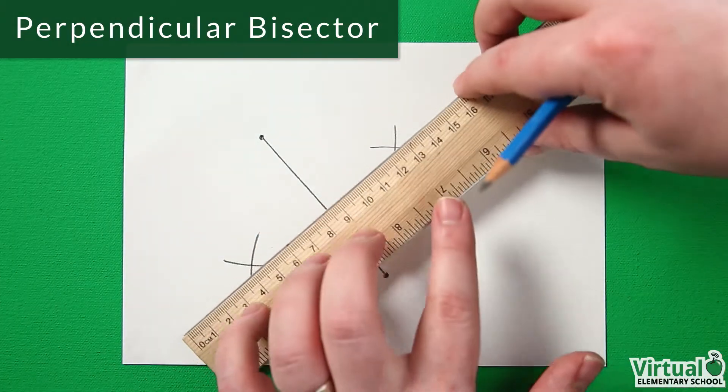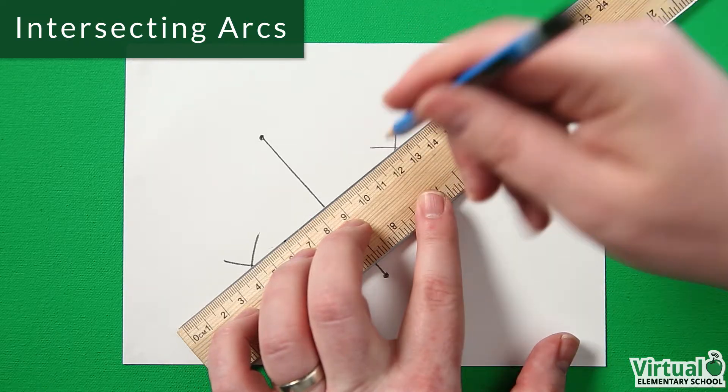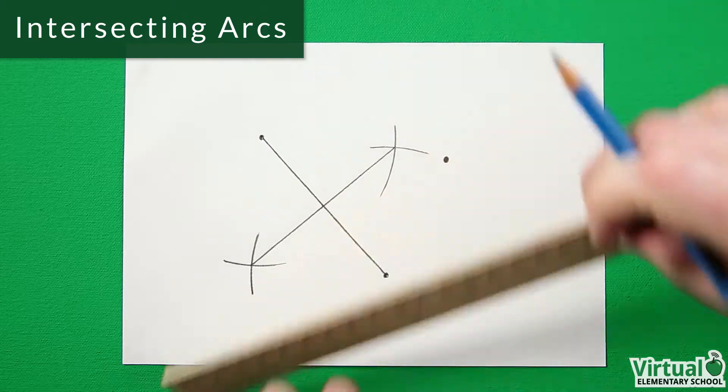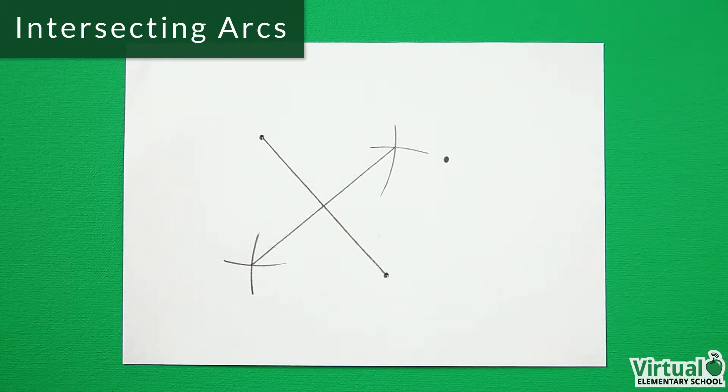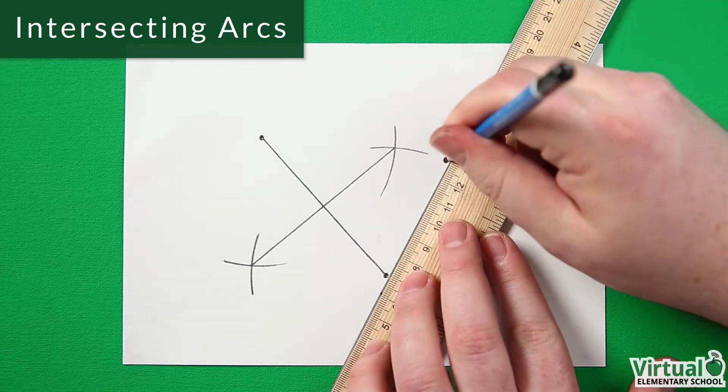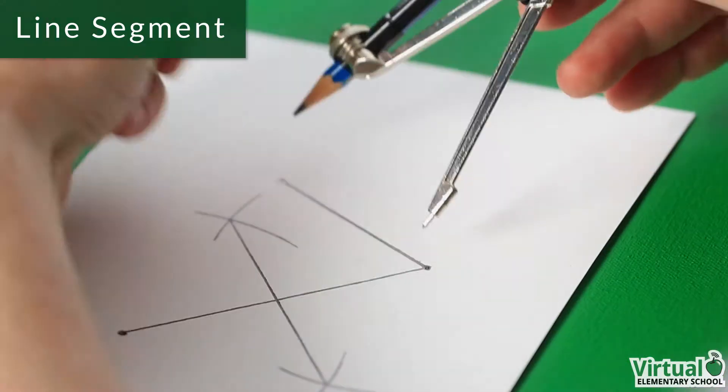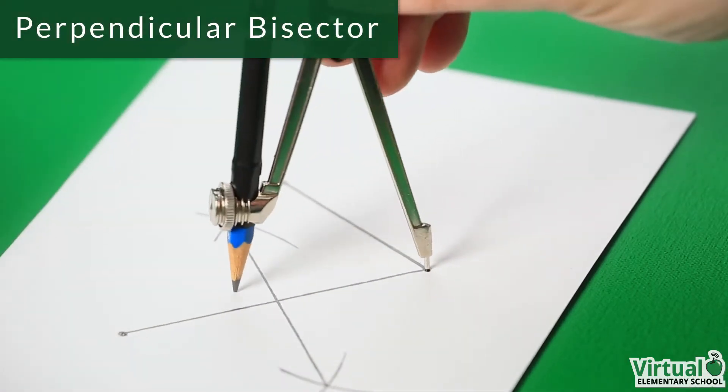Then, we join together the intersecting arcs with another line segment. Now, let's repeat the process with two different points. We join them with a line segment and construct the perpendicular bisector.